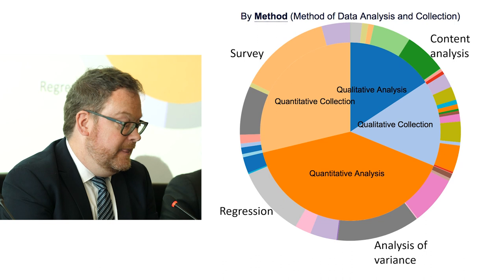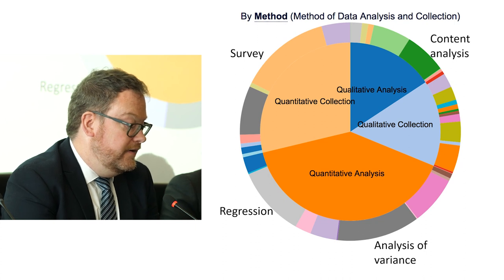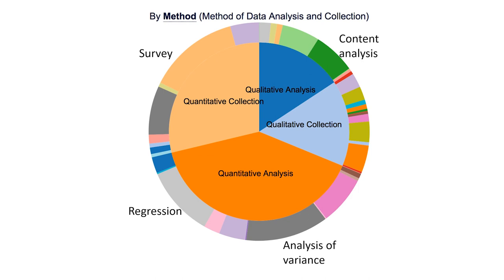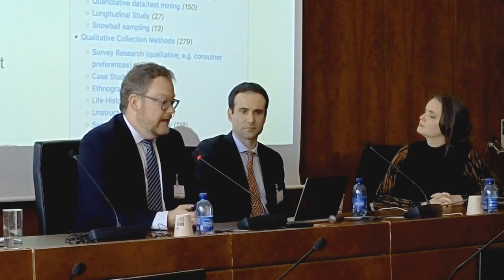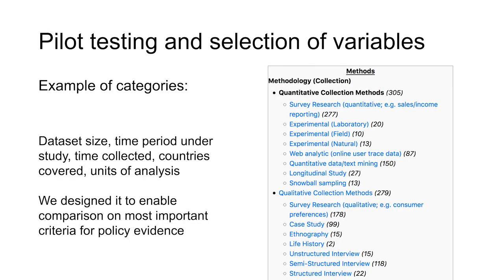This is a visualization of the whole corpus. We see that there are about equal measures of quantitative collection and quantitative analysis, and that they dwarf the qualitative papers, though there are a fair number of those. Some of the main ways researchers have investigated copyright's effects include surveys, and on the qualitative side, content analysis. In terms of analyzing data, we see a lot of regression analysis and analysis of variance. We had to determine the scope of variables used to sort papers as they were brought into the corpus.